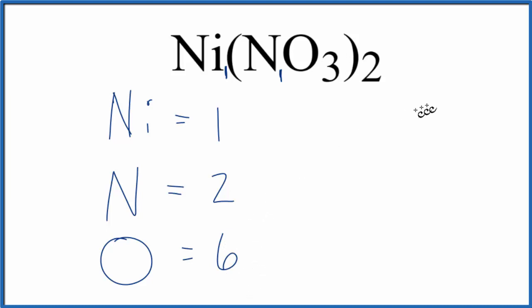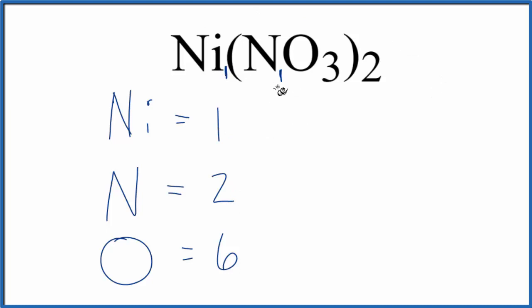To find the total number of atoms for nickel two nitrate, we'd add six plus two, that's eight, plus one — nine. So we have nine total atoms for Ni(NO₃)₂.